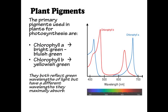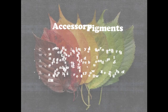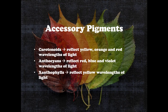The primary pigments used in plants for photosynthesis are chlorophyll A and chlorophyll B. They both reflect green light but have different wavelengths that they maximally absorb. In addition to chlorophyll A and B, many plants also contain accessory pigments which expand the range of light wavelengths that can be absorbed and used for photosynthesis. These other pigments appear to us as the reds, golds, and oranges we see in the fall.